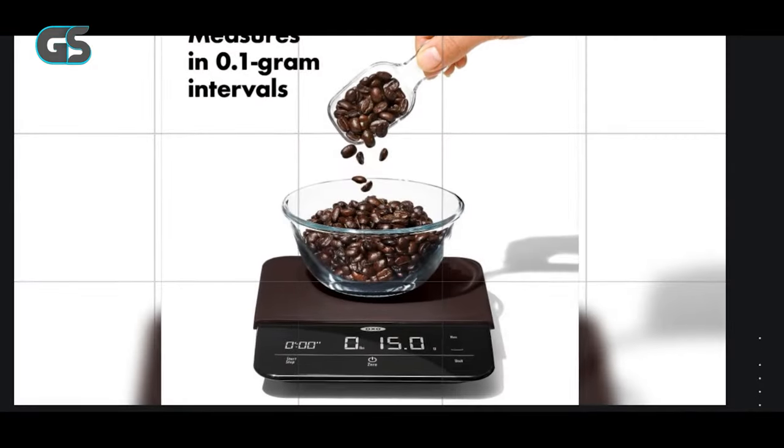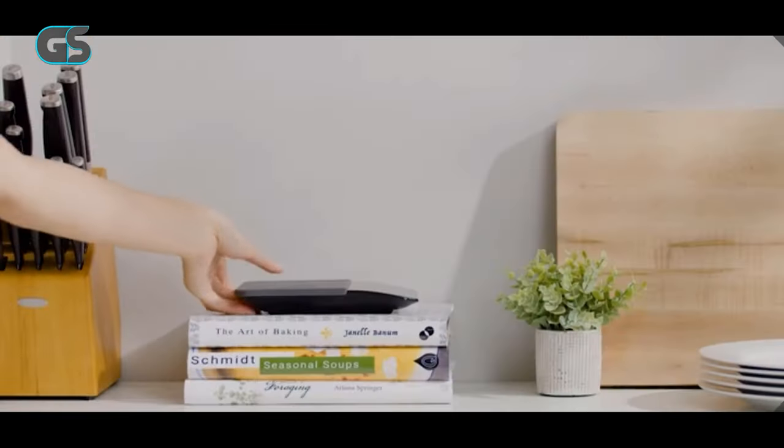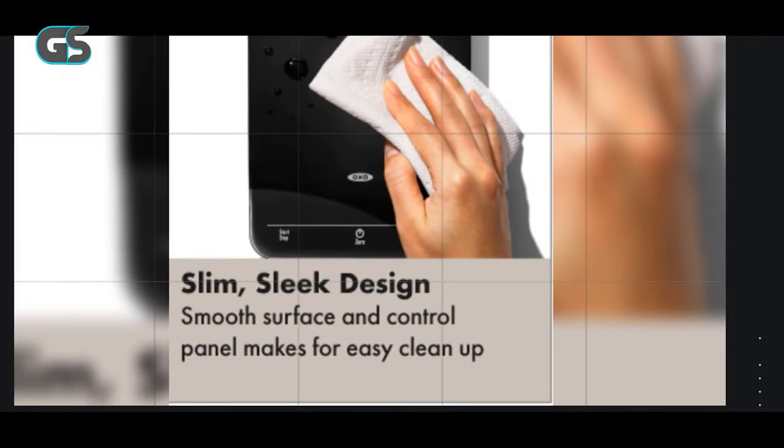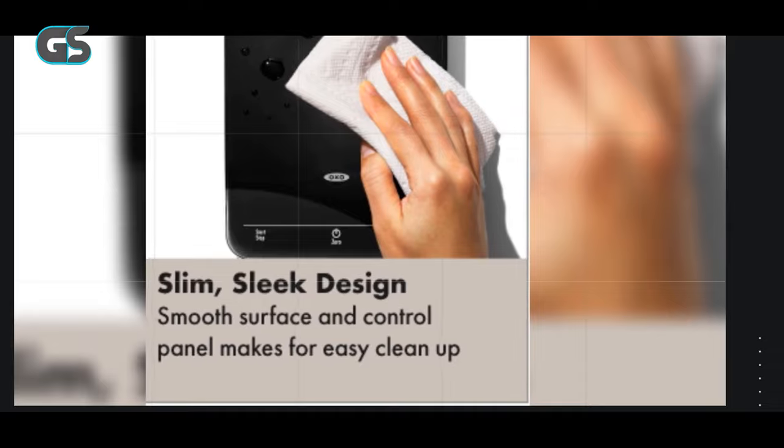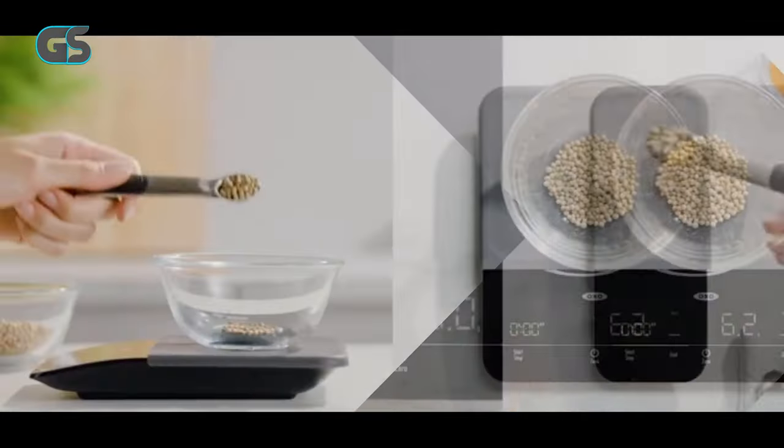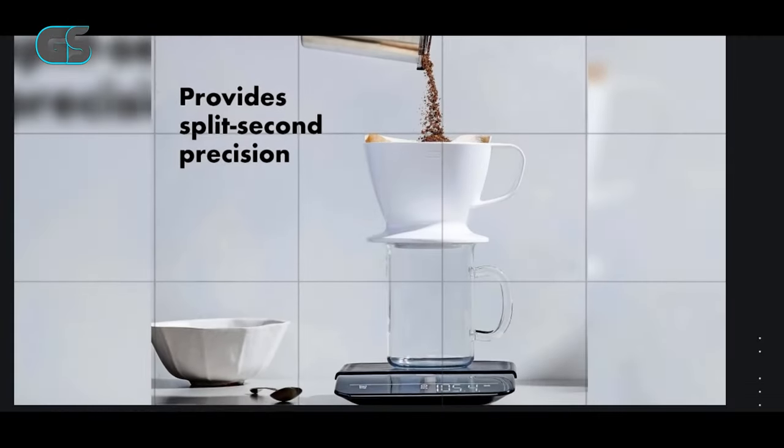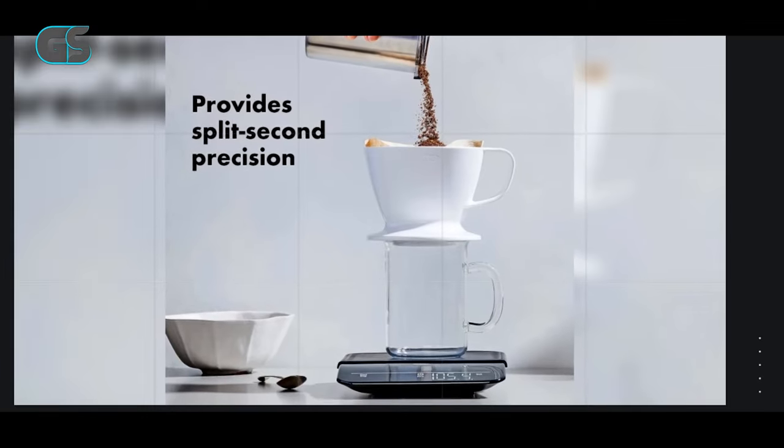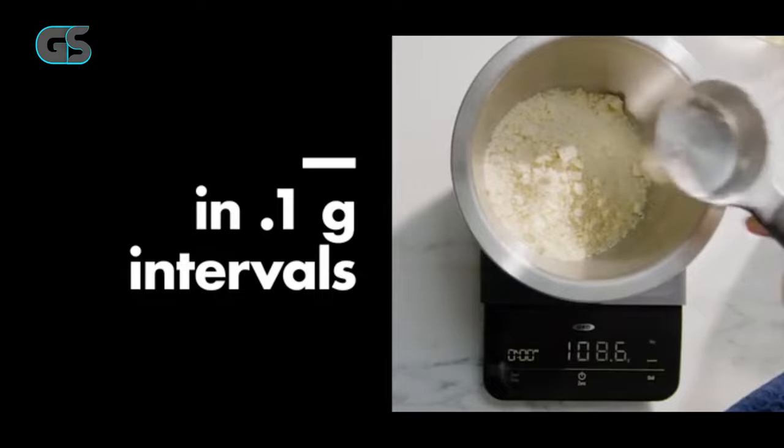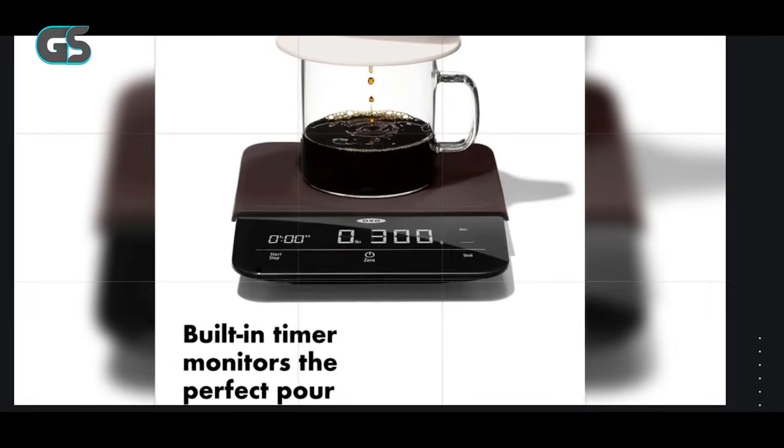The standout feature of this scale is its precision. A 0.1 gram increment ensures accurate measurements that are crucial in achieving the perfect coffee-to-water ratio. Whether you're crafting pour-over, French press, or espresso, this scale's precision becomes your secret weapon for consistent, outstanding brews. The integrated timer is another invaluable tool. It takes the guesswork out of the brewing process, allowing you to focus on extraction time, blooming, and pouring techniques. This ensures that every cup is perfectly crafted, brimming with rich flavors and aromas.